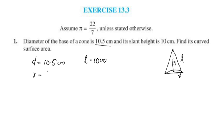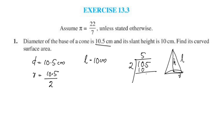The radius is half the diameter, so radius equals 10.5 divided by 2. 5 twos are 10, 2 twos are 4, giving us 5.25.